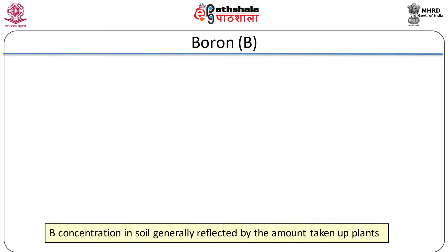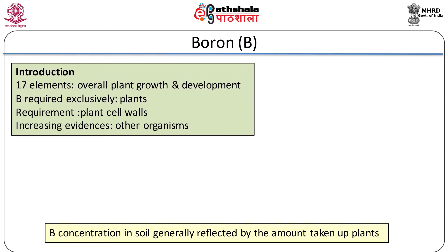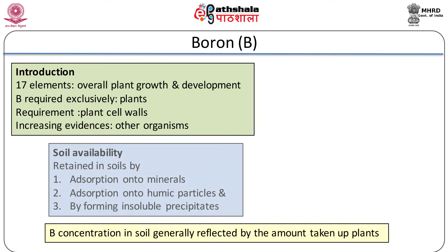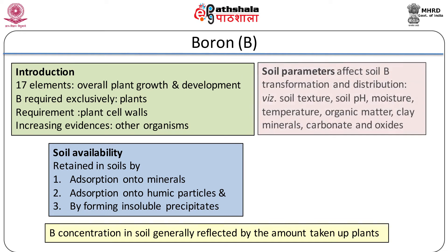Let me begin with an introduction to boron. Of the 17 elements considered essential for overall plant growth and development, boron was long been considered to be required exclusively only for plants, but not for animals. However, increasing evidences have suggested essential roles for boron in other organisms including animals and bacteria. Boron in the form of boric acid or borate is an essential micronutrient element for plant growth and development. Boron is retained in soils by adsorption onto minerals and humic particles and by forming insoluble precipitates. A large number of soil parameters like soil texture,